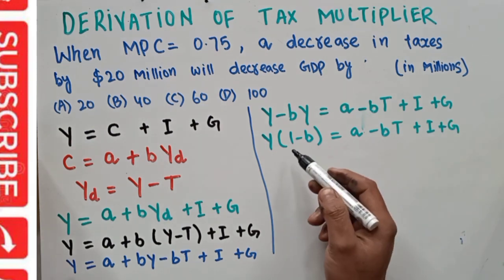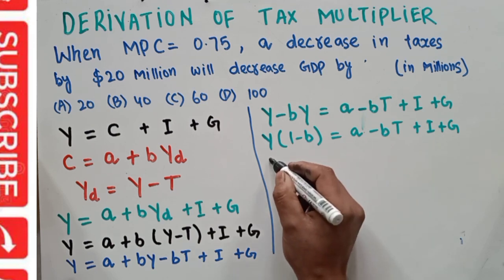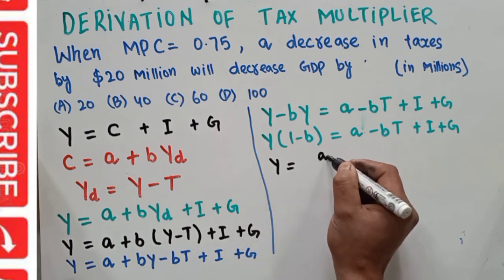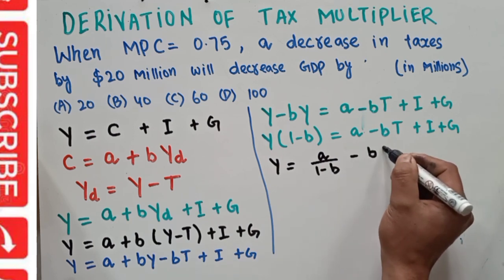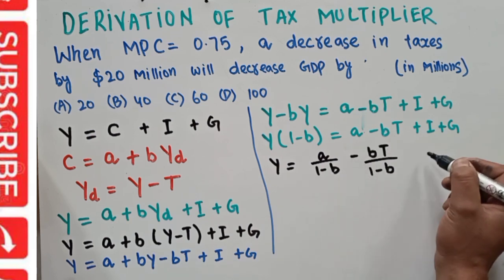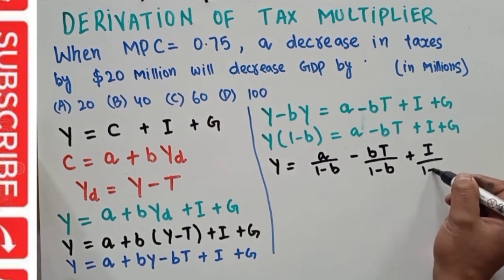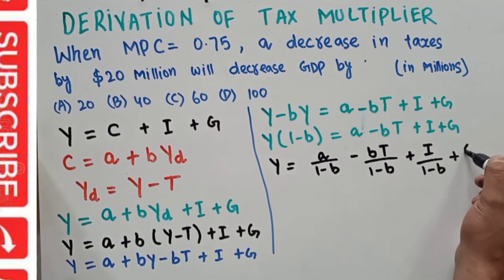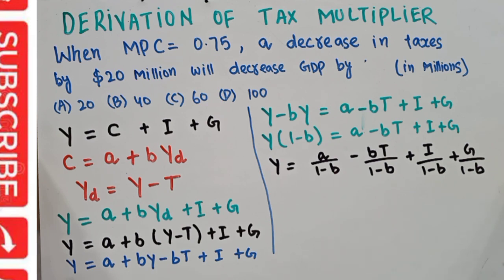Dividing both sides by (1 − b), we get: Y = a/(1−b) − bT/(1−b) + I/(1−b) + G/(1−b). Now we can use this equation to find the tax multiplier.